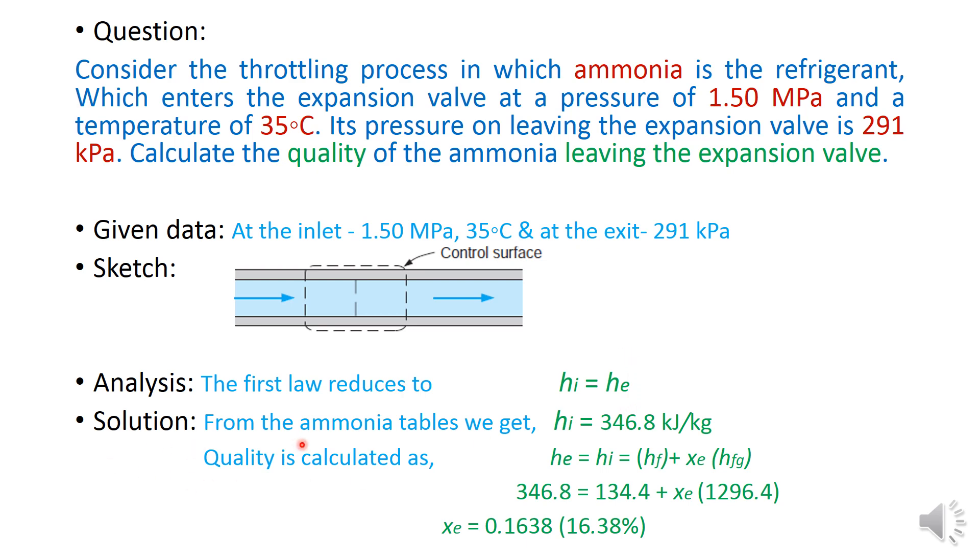So the solution is from ammonia tables. We have to get HI from these two conditions, 1.5 MPa and 35 degrees Celsius. Again we need to check the phase. If it is superheated then we need to go to superheated table and then find its HI. Otherwise from the saturated tables as usual.